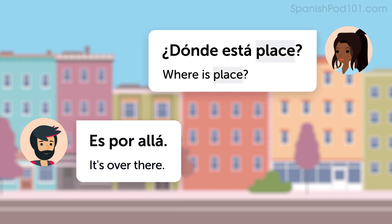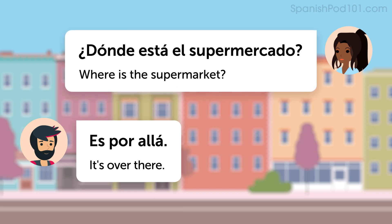First of all, you'll need to learn how to say 'where is [place].' The pattern is: ¿Dónde está... [Place]? For example, 'Where is the supermarket?' — ¿Dónde está el supermercado?